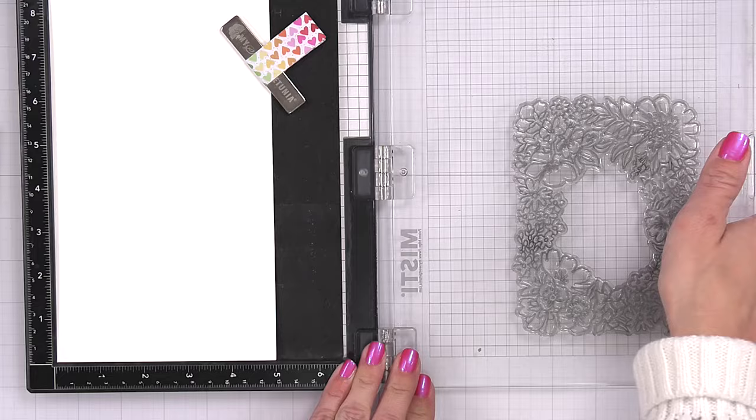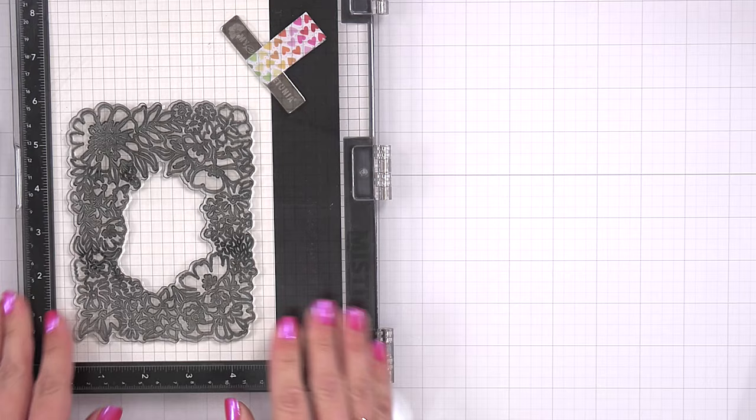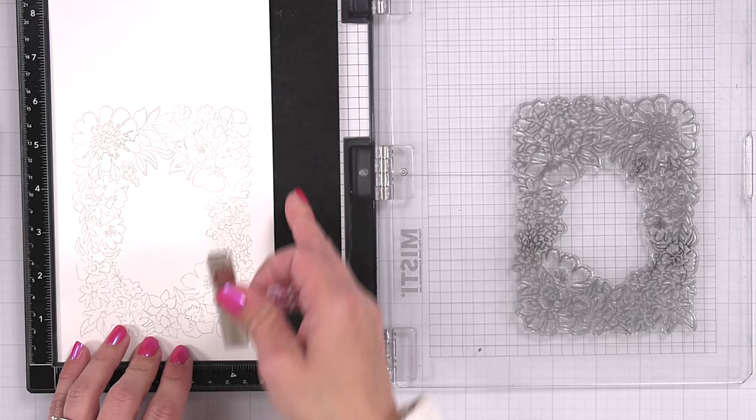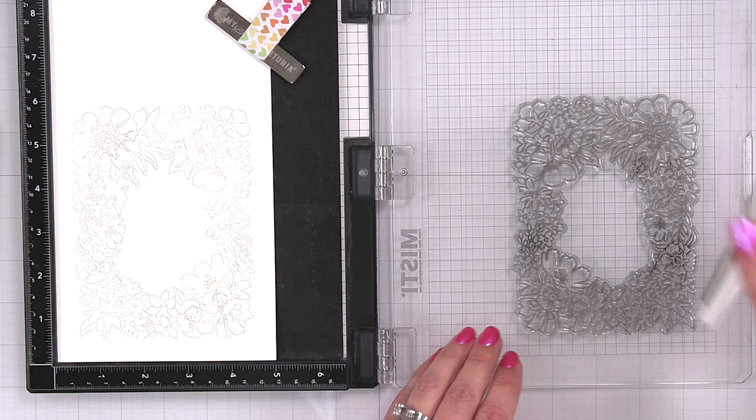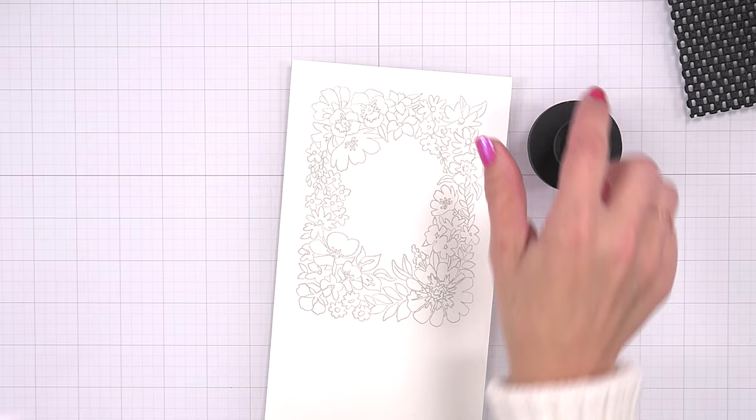I personally like to start by stamping in a light color first versus going right in with the black. When I stamp it down, I am going to leave this placed in my Misti tool so that I could come back and stamp on top of it when I am done ink blending. One of the reasons that I do this is that I am reducing the risk of me smearing my black ink. By starting out with a light color, I'm just reducing those chances.